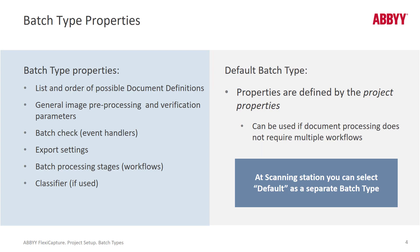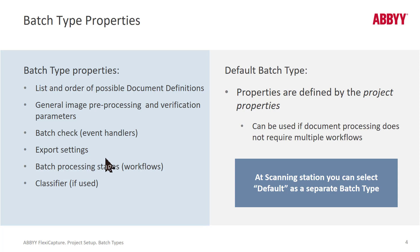Let's drill down and look more closely at the different items in a batch type. We can have a list and order of execution of possible document definitions, image preprocessing settings and verification parameters, and event handlers. There are also export settings — that's really about what to do with non-recognized images, since FlexiCapture exports are set up at the document definition level. So with the batch type, we're talking about destinations for unknown or unrecognized images. We can also set up workflows and apply classifiers.